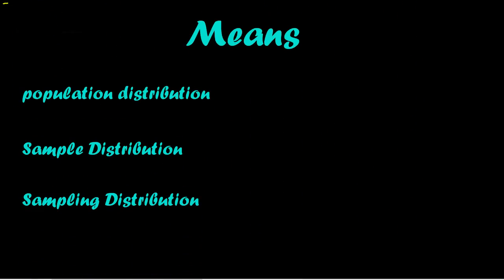Now let's talk about means. When you're talking about means, there's a lot of things that change. The mean of an entire population — for example, the mean weight of every deer in the world — would be the true mu. But in that population of many, many deer, each deer is going to have its own weight and will deviate. So there is a standard deviation within a population, and we call that sigma — that is the standard deviation of the population.